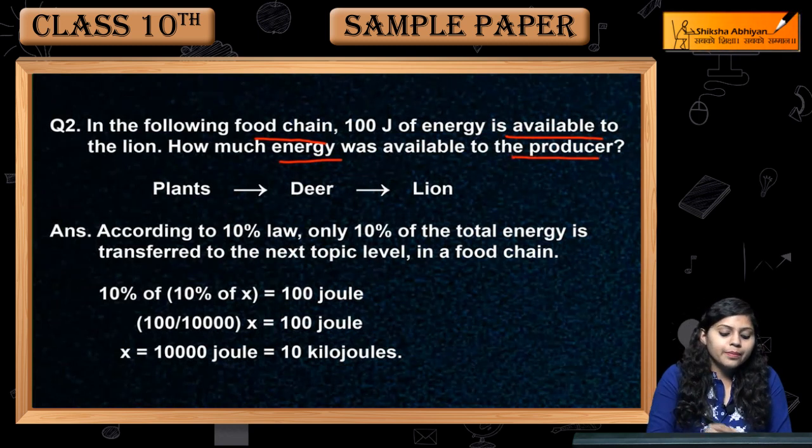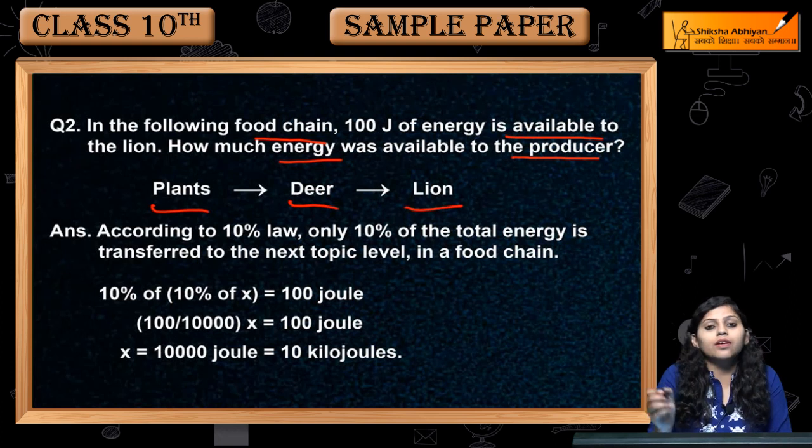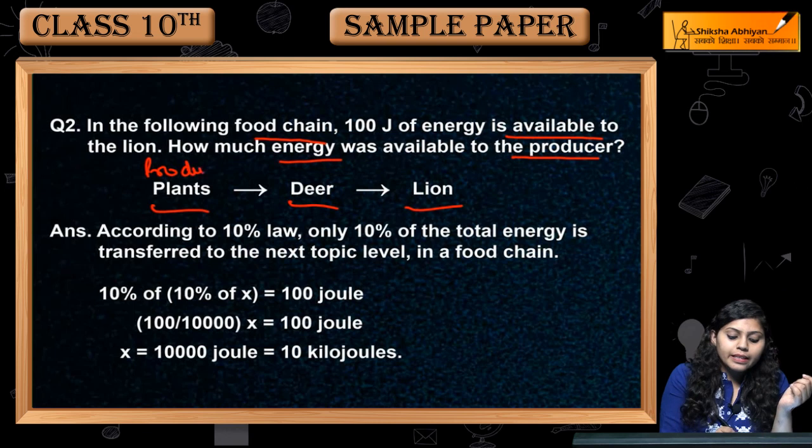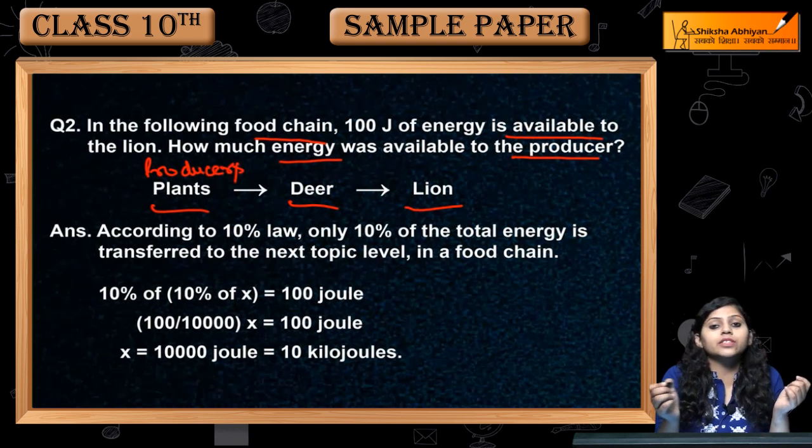Food chain is given: plants, deer, and lion. So what are plants? Producers are given. We must tell how much energy is given to the producers.